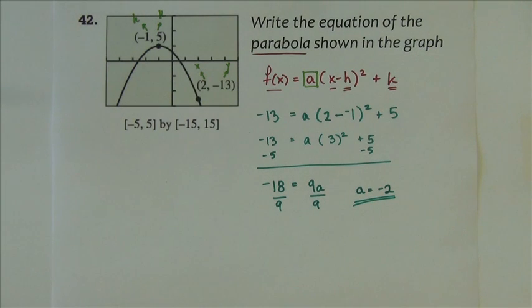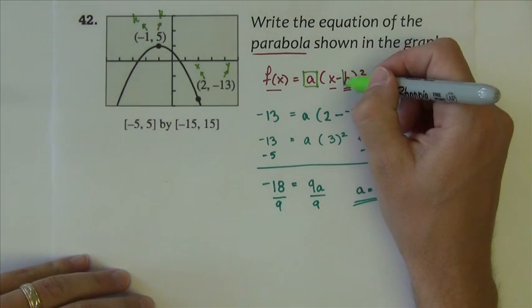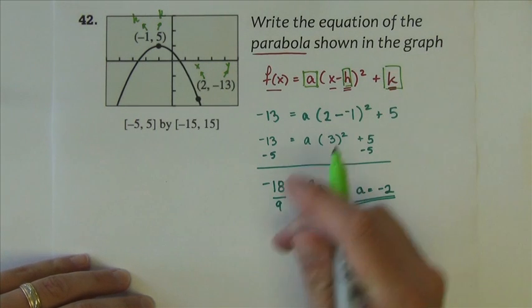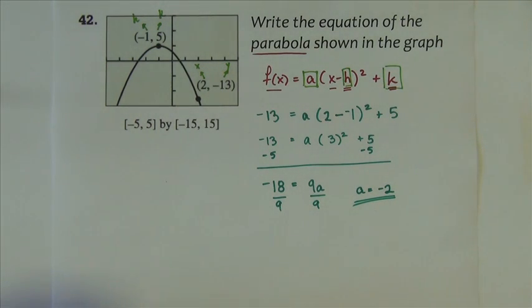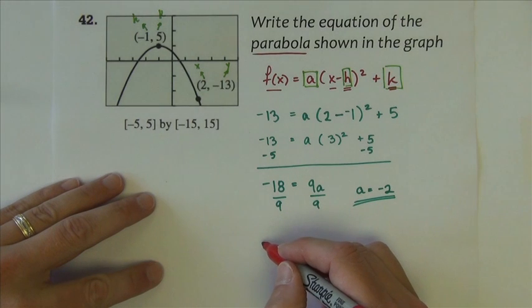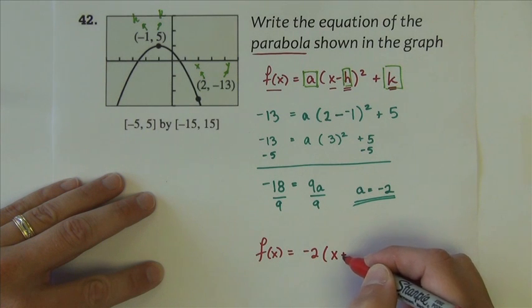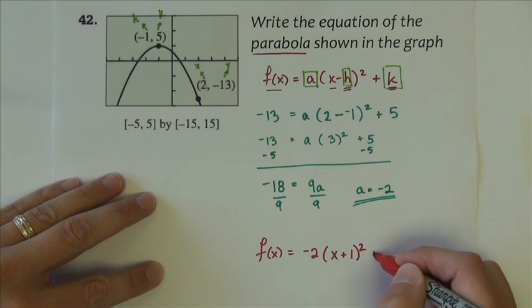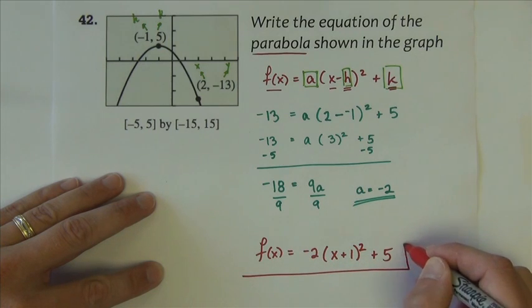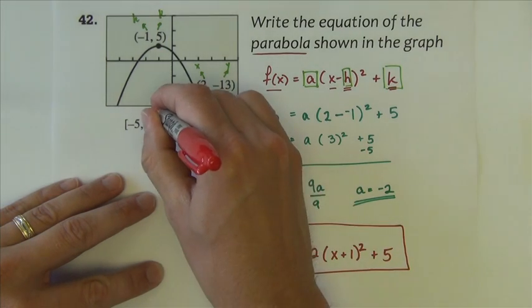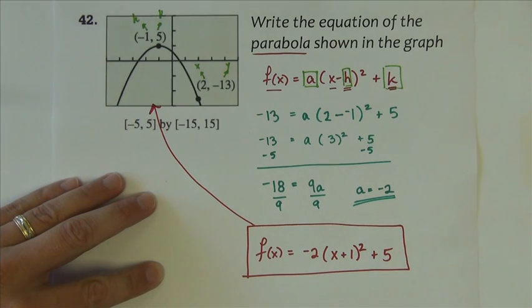Now, I haven't actually solved the problem yet. The problem didn't say find A, it said find the equation shown in the graph. Well, the equation - now that I have the A value, I've got the A, I already had the H, I already had the K - I have the three numbers that I need to allow me to write this equation. F of X equals negative 2 times X minus negative 1 squared plus K. This is the equation of that parabola shown in the graph.